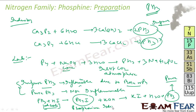This Phosphonium Iodide (PH4I), when treated with potassium hydroxide (KOH), gives back PH3. You get KI and H2O and PH3 — this PH3 is pure Phosphine.